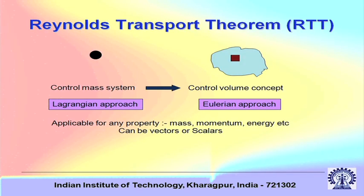In Reynolds transport theorem, we have a Lagrangian approach with a control mass system, and we have a control volume concept which is the Eulerian approach. We want to write a mathematical transformation that converts the Lagrangian approach to the Eulerian approach.